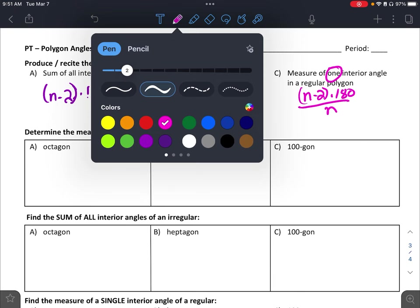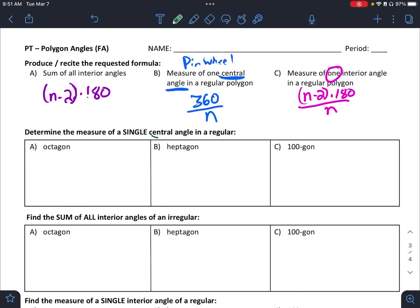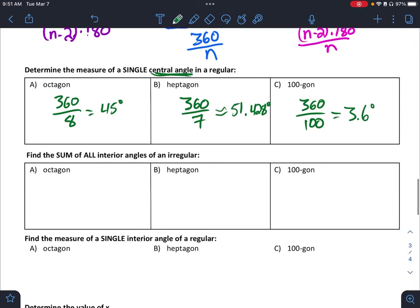So then I am just using these. This first one, we are looking at central angle. So I am going 360 divided by 8. 360 divided by 7. 360 divided by 100. And that gets me 45 degrees. About 51.428 degrees. And 3.6 degrees. So it should be pretty easy. We just got to know which formula to use.